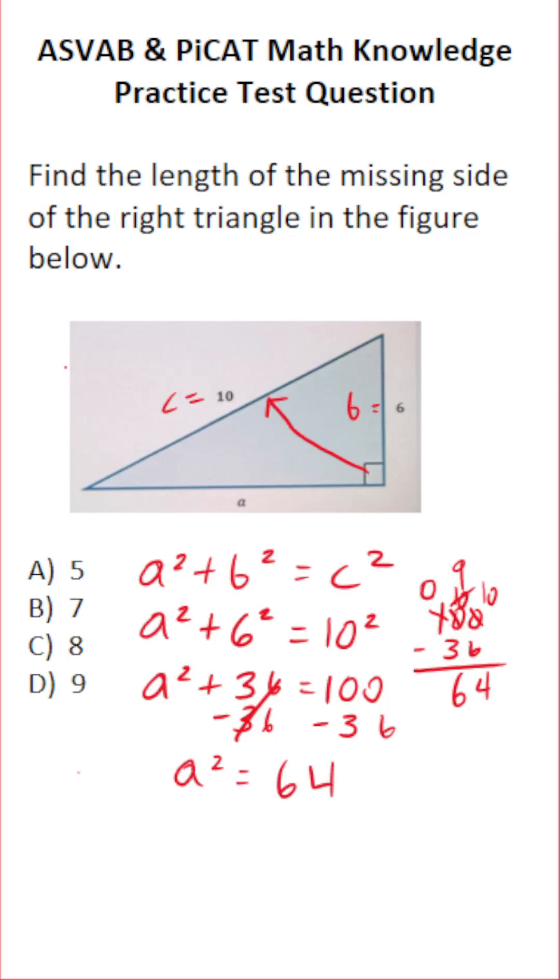Now to get a by itself, again we're solving for a, not a squared. We're going to take the square root of both sides. In doing so, this crosses out this square, leaving you at just a on this side. The square root of 64, as you should know, is 8. So we can see that a is 8. So this one is going to be C.